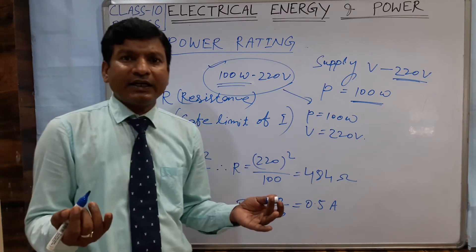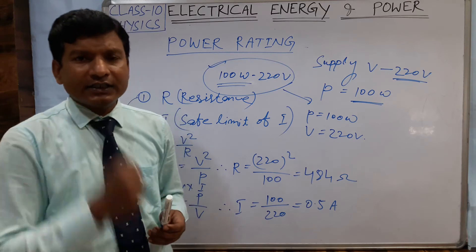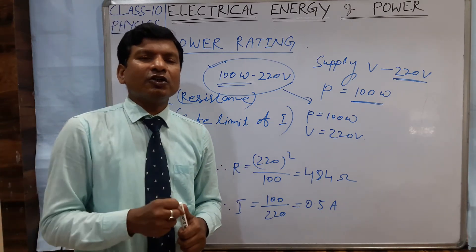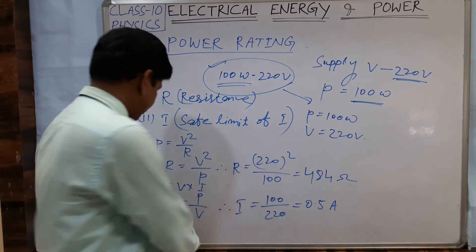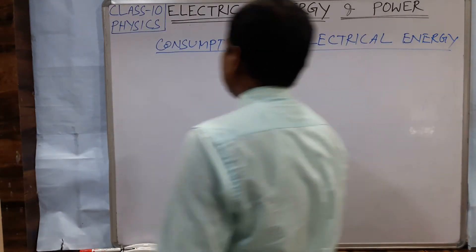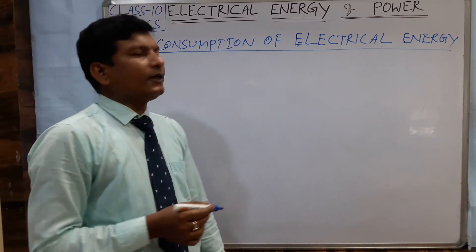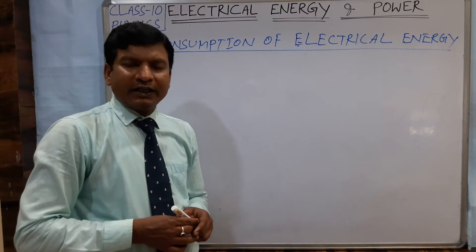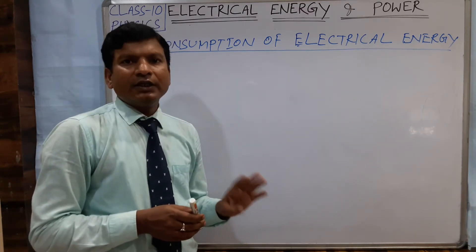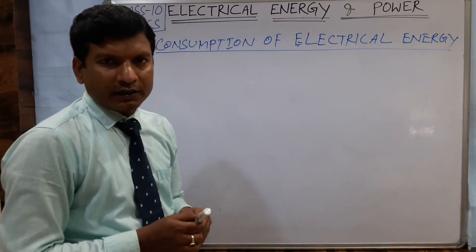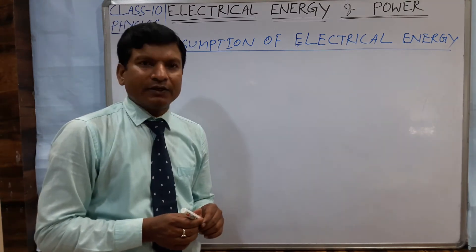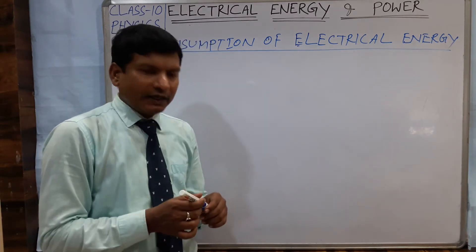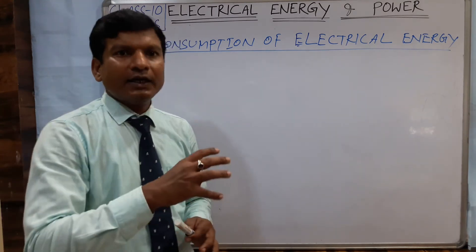Now, how can we calculate the electric energy consumed at homes? We use different electrical appliances at home — refrigerator, air conditioner, fan, electric bulb, and more. The electric energy consumed is calculated in the unit kilowatt hour, because kilowatt hour is the commercial unit of electric energy and it is the unit in which we pay the cost of electricity to the electric department.